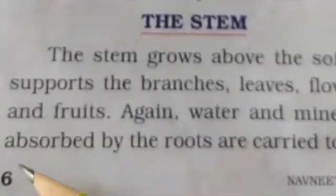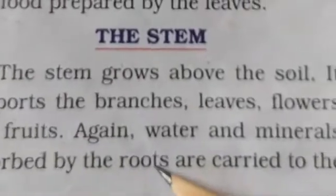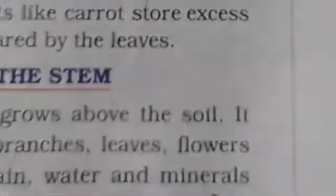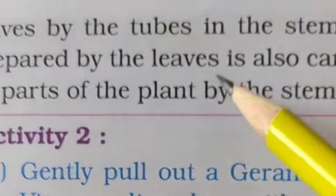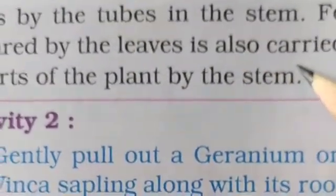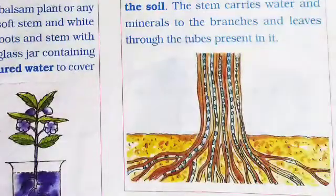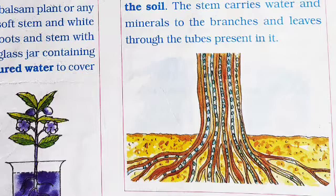Water and minerals absorbed by the roots are carried to the leaves by the tubes in the stem. जो roots होती है plant की, वो absorb करती है — water और minerals from the soil. So the roots carry water and minerals to the leaves by the tubes. जो tubes हैं वो water and minerals supply करते हैं.